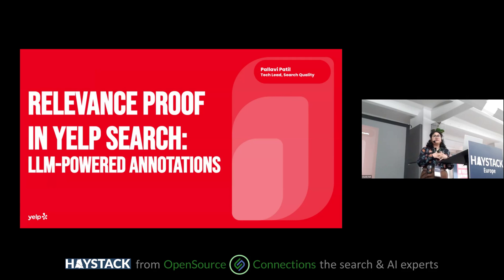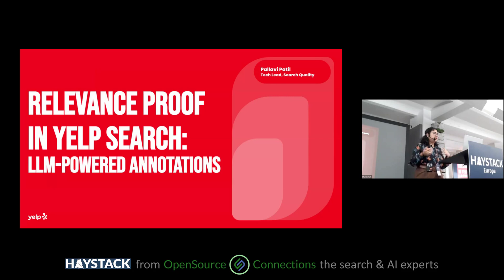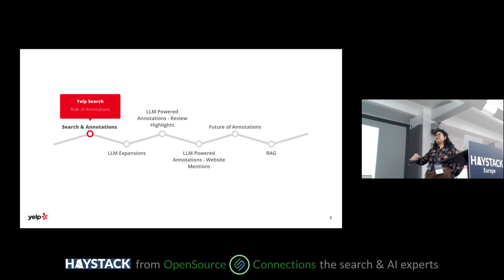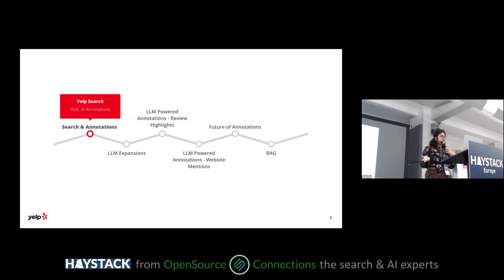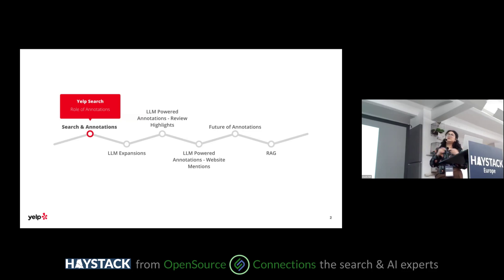I've been in this space for over five years now at Yelp, where I've primarily worked on user-facing solutions in the relevance space. I'm going to be talking about one of those problem areas today — specifically relevance proof in Yelp search with a focus on LLM-powered annotations. I'll start by setting some context on Yelp search and what annotations are, then we'll spend most of the talk on LLM expansions, and finally I'll talk about the future of annotations and how we've leveraged the annotation system for RAG.